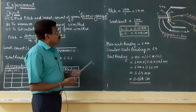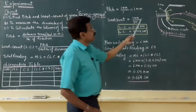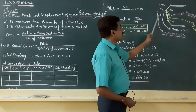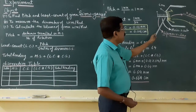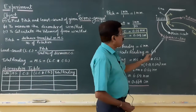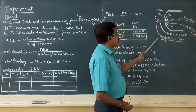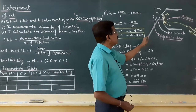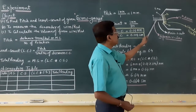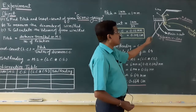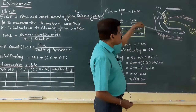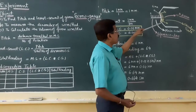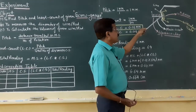For calculation of pitch and least count, here is a diagram showing the main scale and circular scale. This line is called the reference line. On the reference line we have divisions in terms of centimeters: 1 centimeter, 2, 3, and so on. The circular scale, which rotates over the main scale, has 100 divisions.